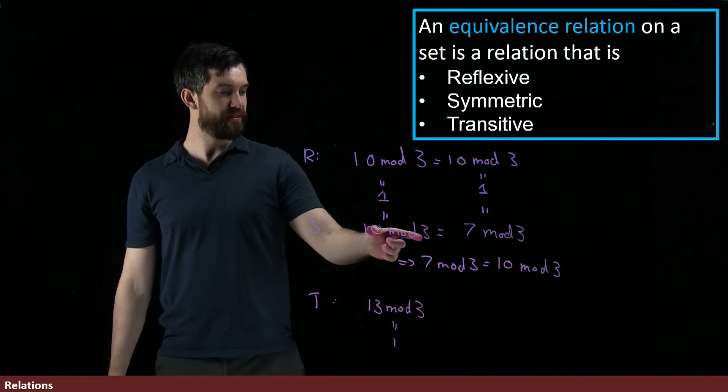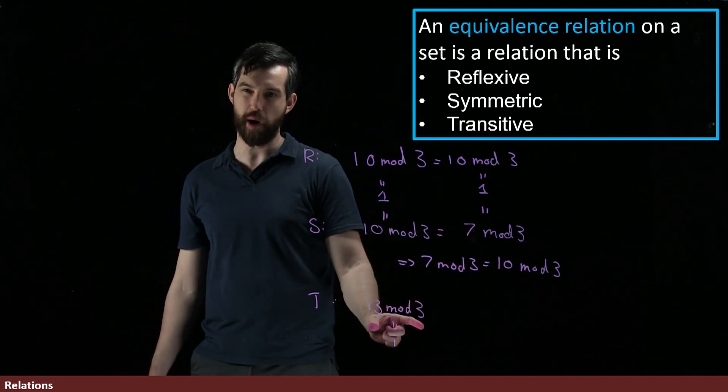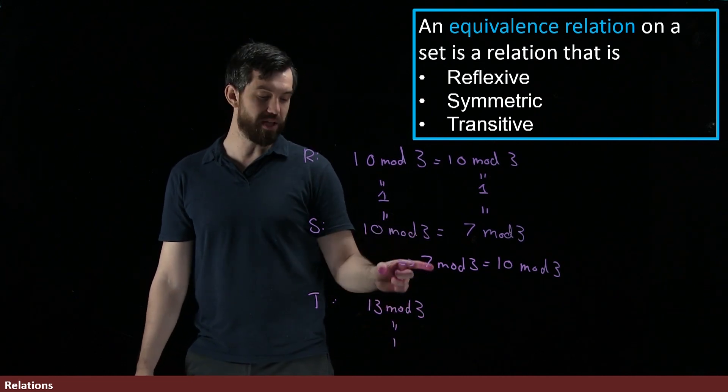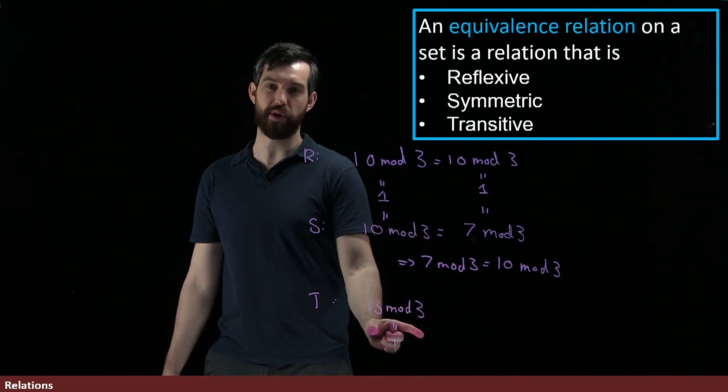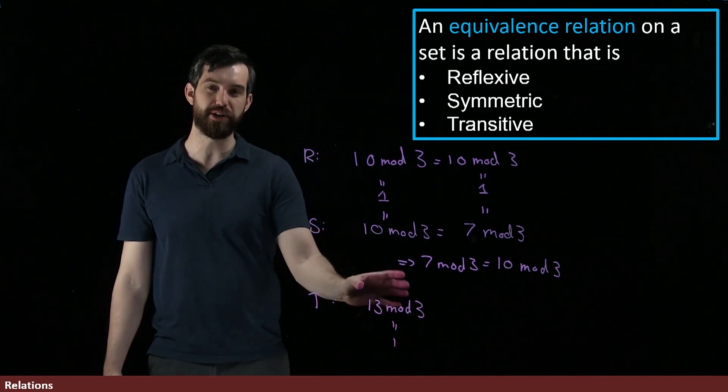Well, if you have that 10 mod 3 equals 7 mod 3, and you have that 7 mod 3 equals 13 mod 3, which you have both of those, then the 10 mod 3 equals the 13 mod 3 as well. And so you can get transitivity for your modular arithmetic.